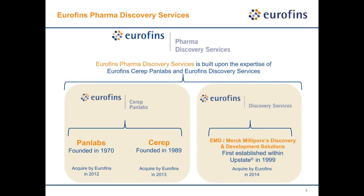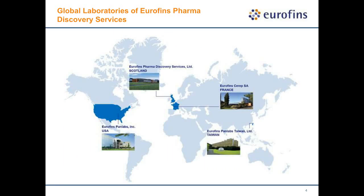The business unit handling internal services is Eurofins Pharma Discovery Services, created by the integration and acquisition of three legacy companies. In 2012, Eurofins acquired the legacy Pan Labs; in 2013, the legacy Cerep, combining them into Eurofins Cerep Pan Labs. In 2014, Eurofins acquired the legacy Merck Millipore or EMD Millipore discovery and development solutions business units, integrating that into what is now called Eurofins Pharma Discovery Services.